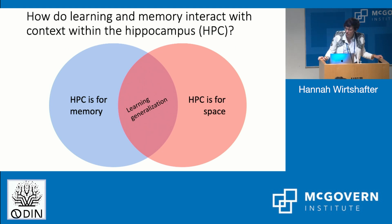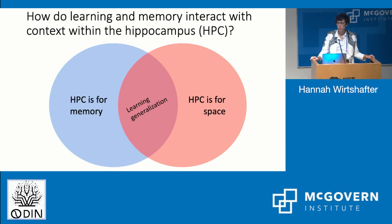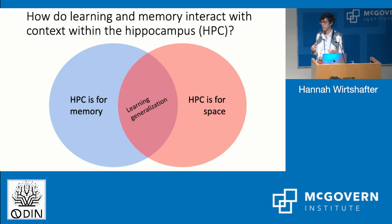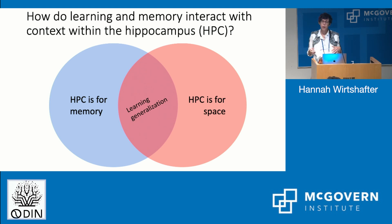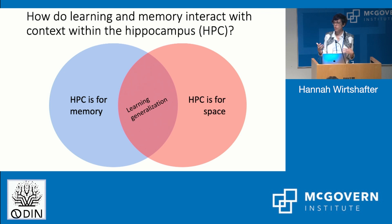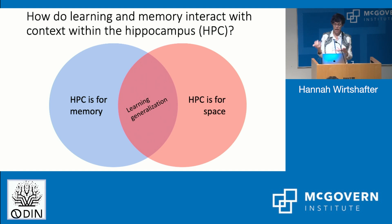Something I'm really interested in is how do learning and memory interact with context within the hippocampus. We all know there's a school of thought that the hippocampus is for memory — like HM, who can't remember anything anymore — and how does that fit with the idea that the hippocampus is for space and navigation. I'm really interested in how these two views fit together, and I think a really interesting way to look at that is by looking at learning generalization: how when you learn something in one context, you're able to transfer that to another context, and how that is represented in the hippocampus.